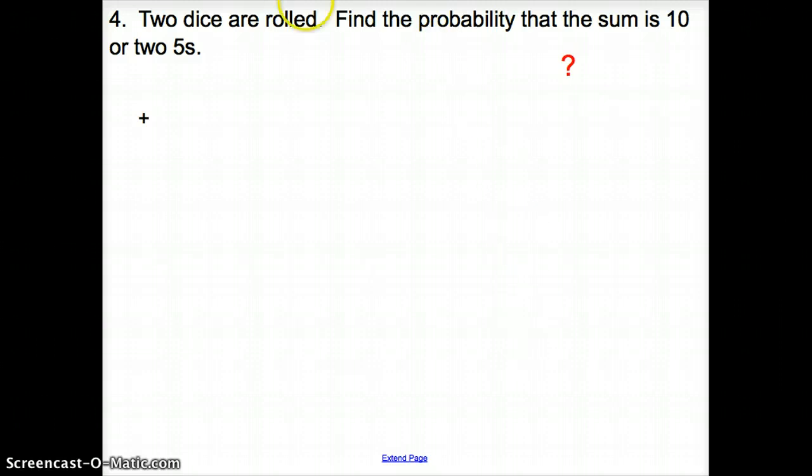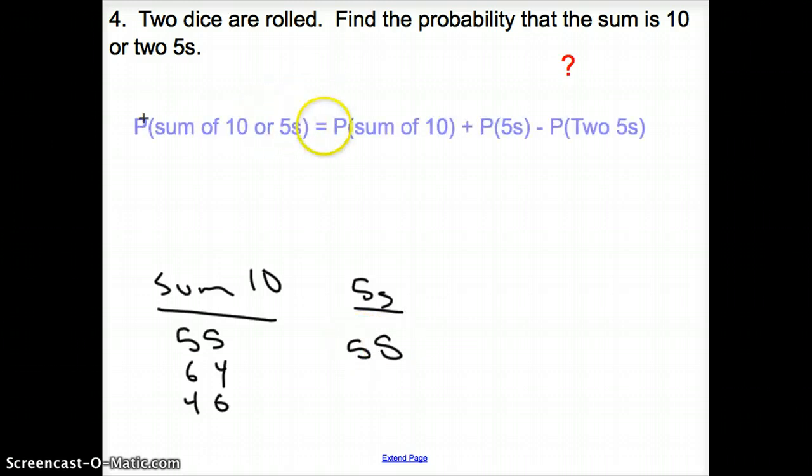Next, for number four, two dice are rolled. Find the probability that the sum is 10 or it is two fives. Is this mutually exclusive or not mutually exclusive? Well, let's think for a little bit. The sum of 10. How can we roll two dice and get the sum of 10? Well, we can roll a 5 then a 5, a 6 then a 4, or a 4 then a 6. How about two fives? There is only one way to roll two fives and that is actually rolling two fives. So, let's take a peek at this.